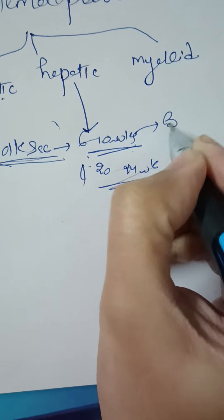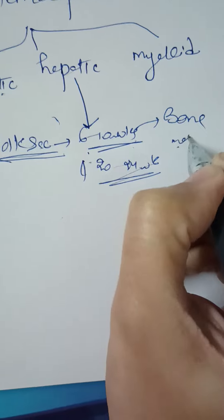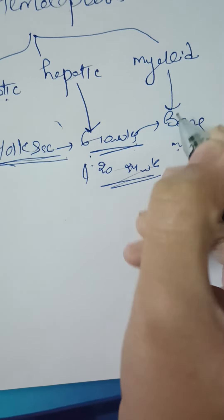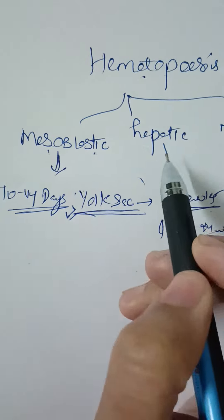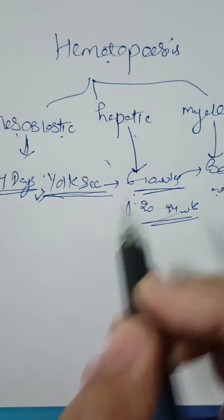After that, it is replaced by bone marrow—that is the myeloid stage. So hematopoiesis has three stages: mesoblastic stage, hepatic stage, and myeloid stage.